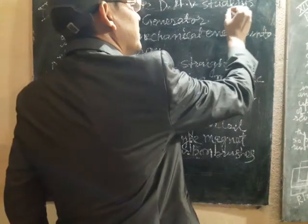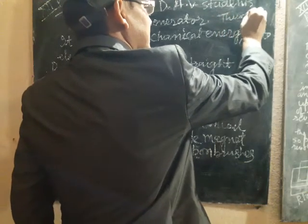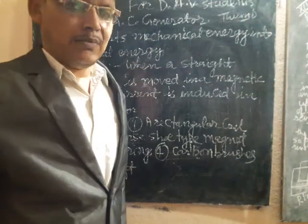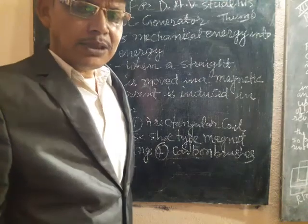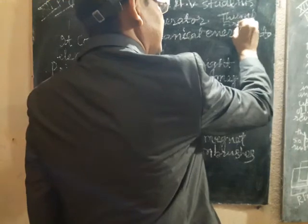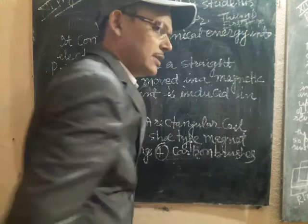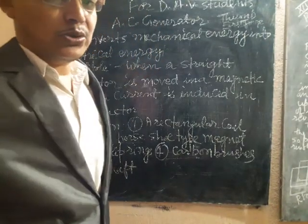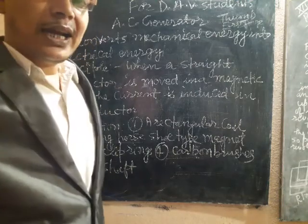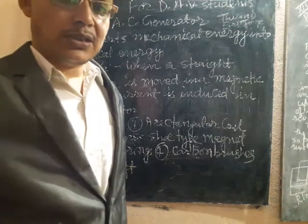Here you can see: on the thumb, M is written — M means motion. The first finger shows field, written as FF. So thumb means motion, first finger means field, and the another finger shows current.